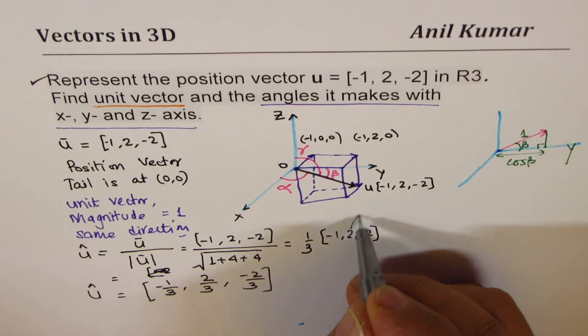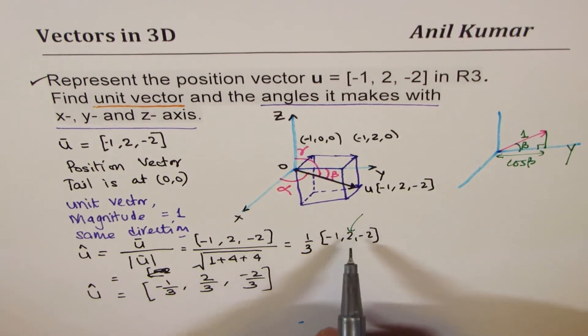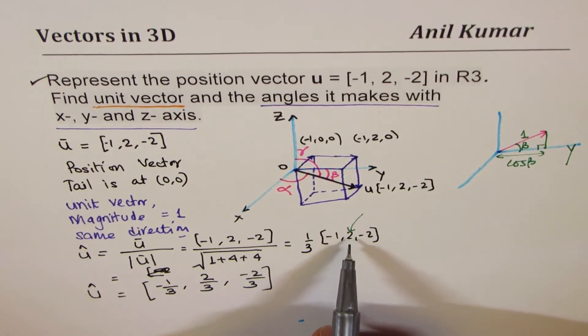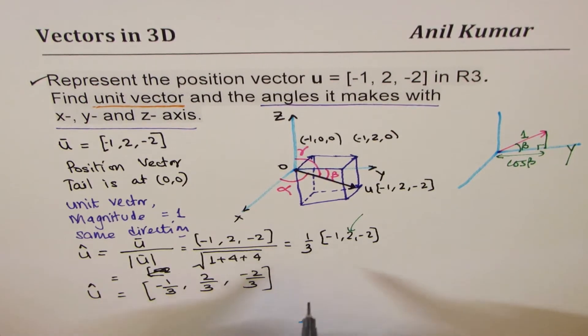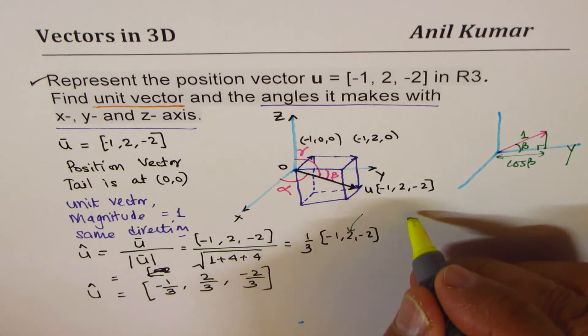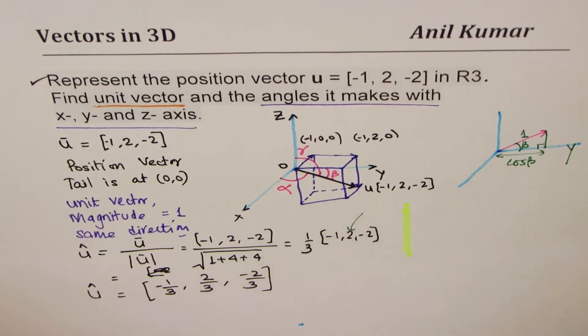Do you see that? So, cos beta actually is, in the unit vector, the direction number. And therefore, you could actually see a unit vector as, let me write down here.